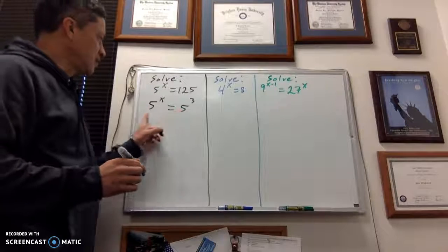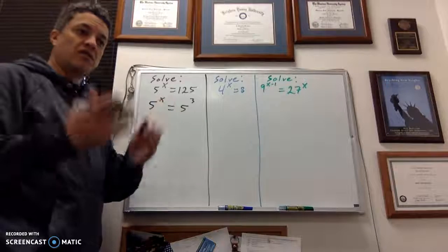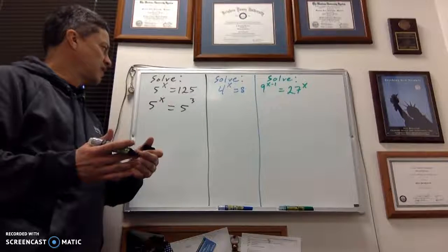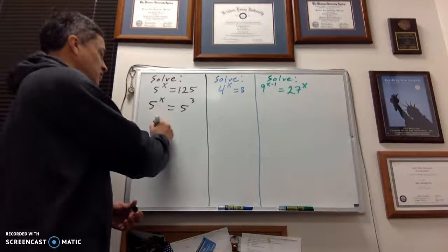So would you agree that these bases are the same, these 5s? Yeah, so they are. Since they're the same bases, let's solve this thing so that I can just work with the exponents. So in other words, my answer here is x equals 3.